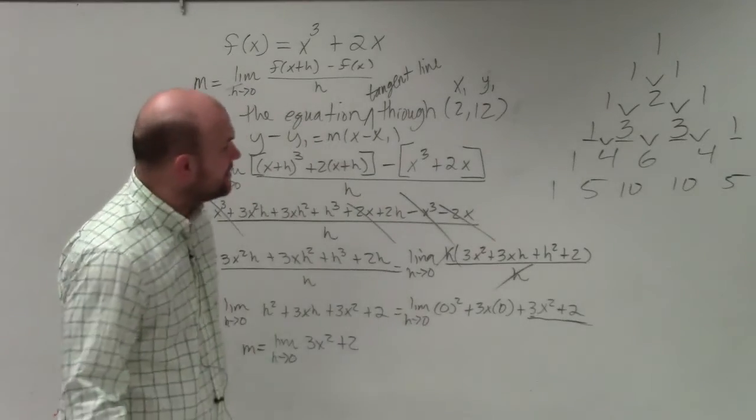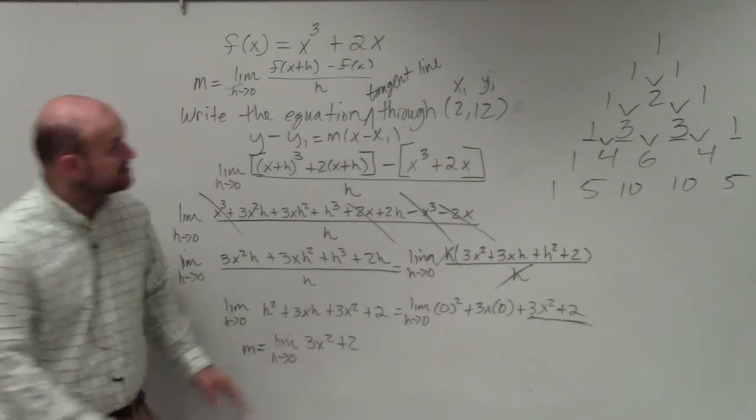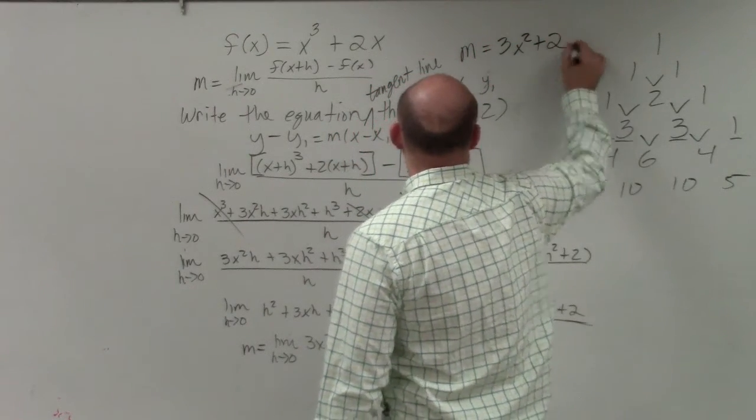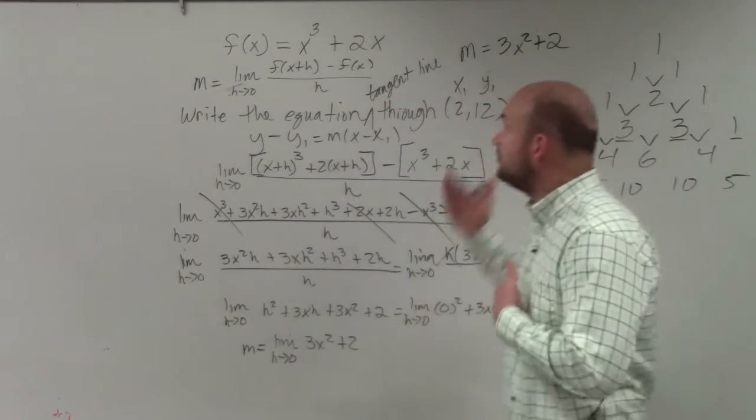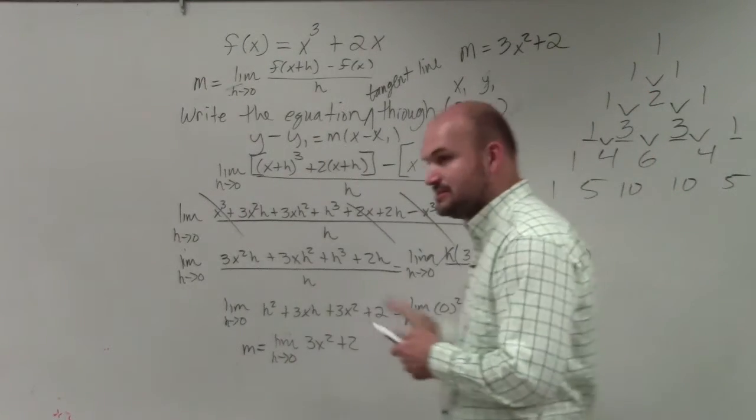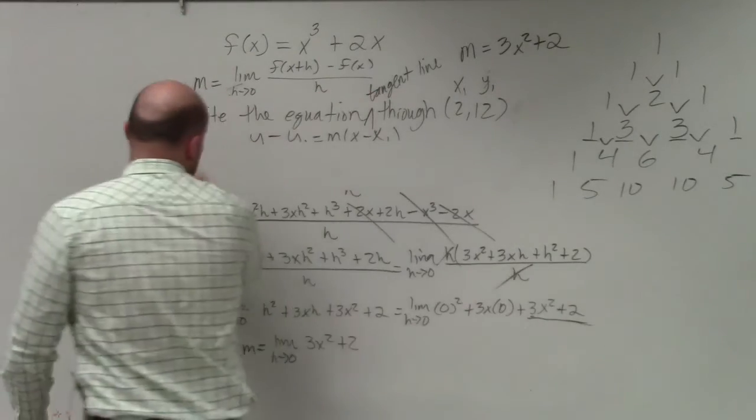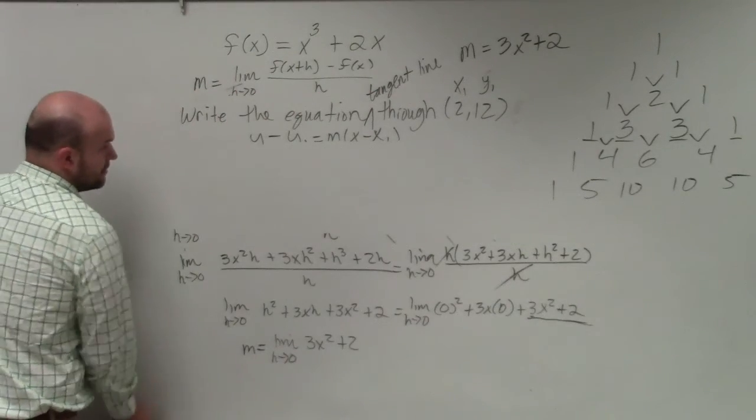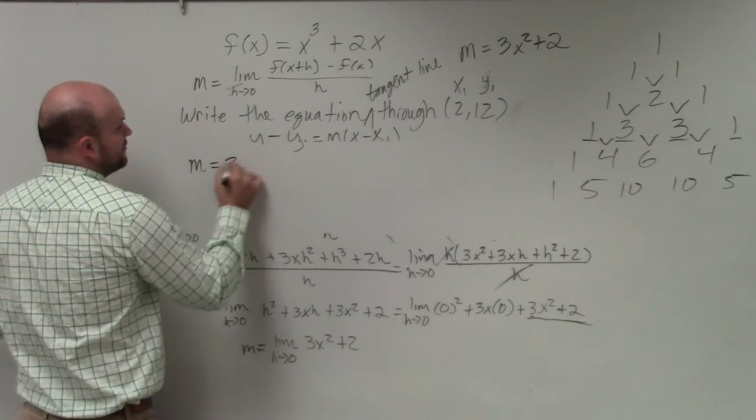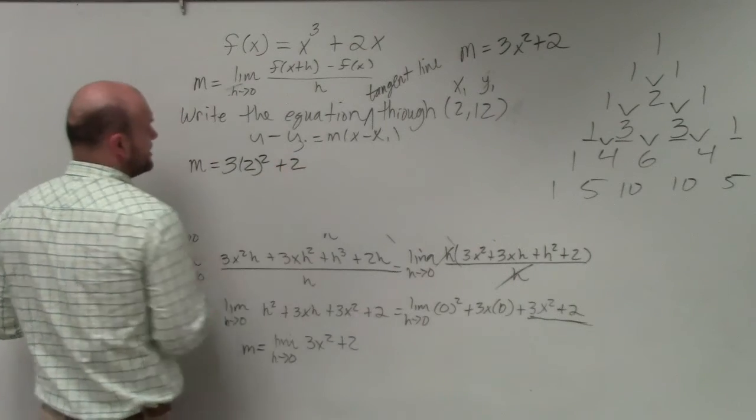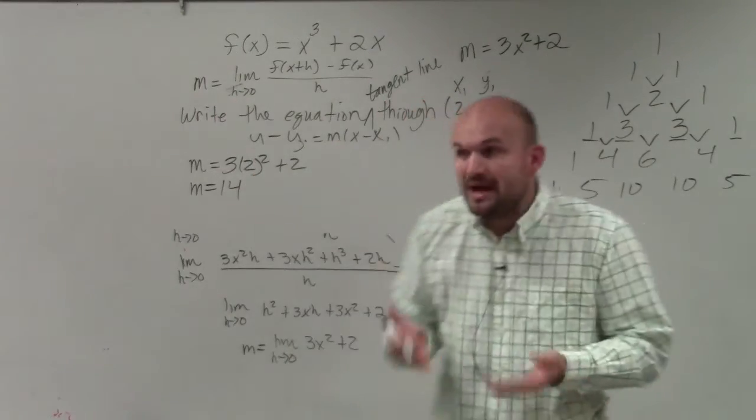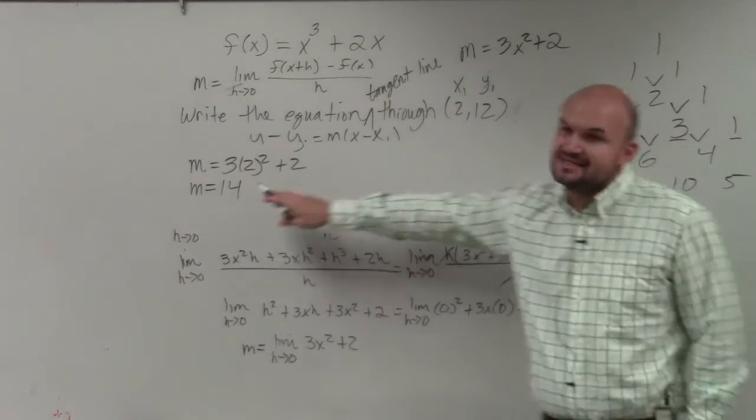And then now, ladies and gentlemen, we now have their slope, which is m equals 3x squared plus 2. And if we want to find the slope at our given point, we basically can go ahead and figure out that x1, we can just plug that in. So therefore, to find our slope, m is going to equal 3 times 2 squared plus 2. So we have 4, 12. That means m is equal to 14. So the slope at our given point of 2, 12 is going to equal 14.